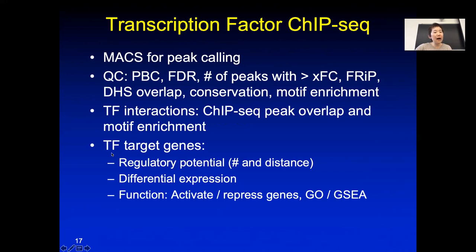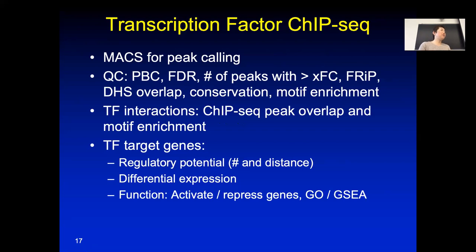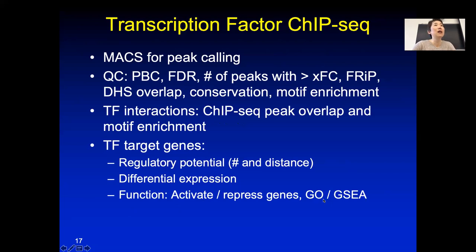In order to figure out a transcription factor's target genes, we use regulatory potential, which is how many binding sites are near each gene, weighted by the distance from the binding site to the gene with some decay distance. It's also great if you have differential expression between when the factor is active and when it's inactive — through stimulation, knockdown, or knockout — to look at differential expression. Combining ChIP-seq data with differential expression gives much better target gene identification, and you can also use gene set enrichment or gene ontology to figure out the biological function.